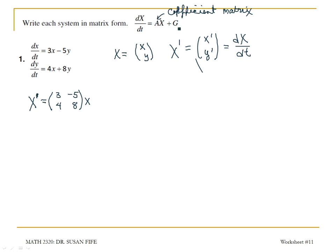And then this G would be considered our constants, or G is the terms that do not contain x or y. They might be t terms. In this case, G is 0. There is no term that does not contain x or y. And so here we have our answer. This is matrix form.